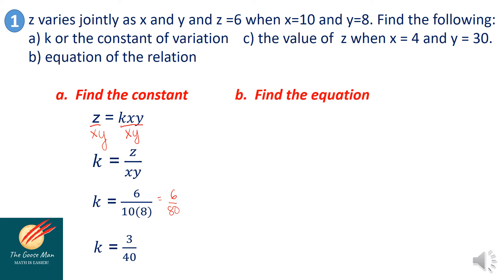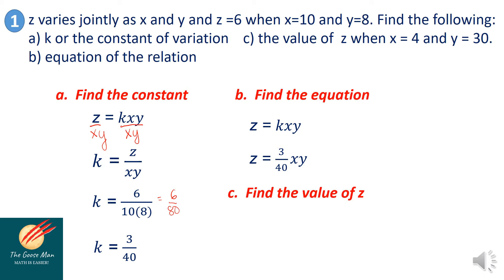Next, let's find the equation. Z is equal to k times x times y. Substituting the value of k, which is 3 all over 40, the equation is z is equal to 3 over 40 times x times y. To find the value of z when x is equal to 4 and y is equal to 30, substitute: z is equal to 3 over 40 times 4 times 30.